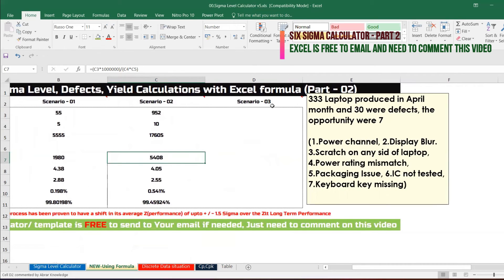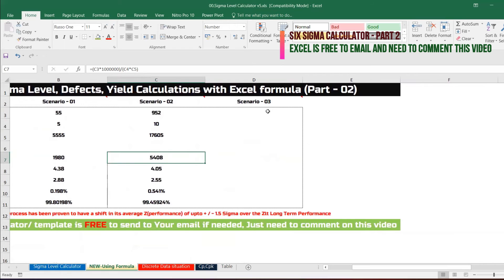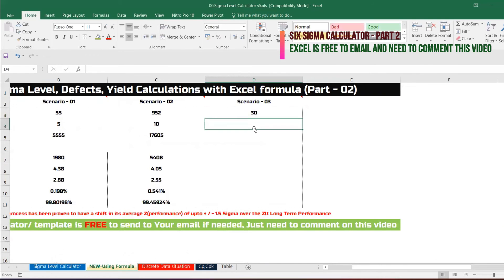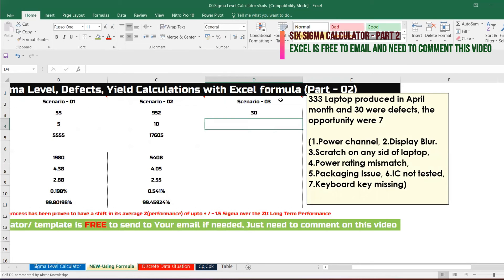333 laptops are produced in April and 30 defects were found and 7 are opportunities. Defects are 30, opportunities are 7: power cable, power channel, display blur, scratch on any side of the laptop, power writing, packaging issue, IC not tested, keyboard.